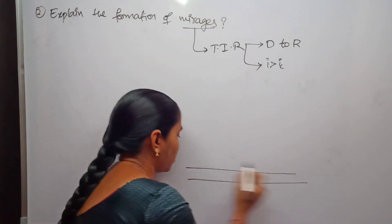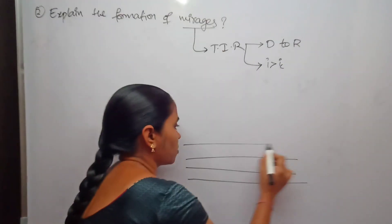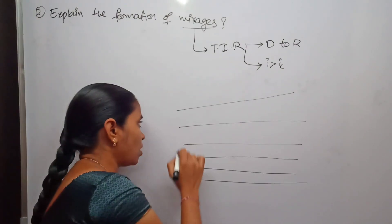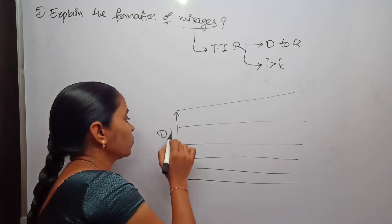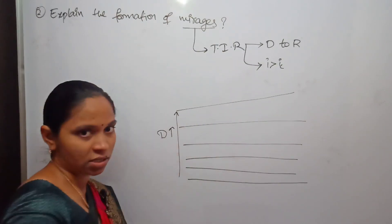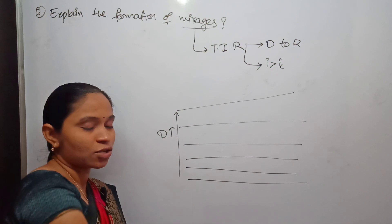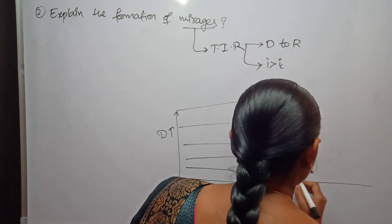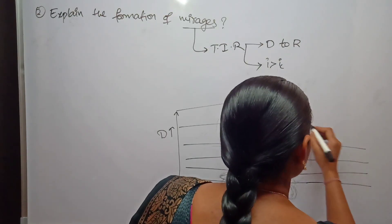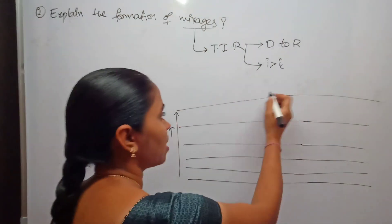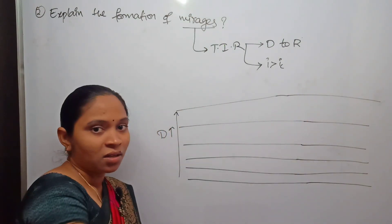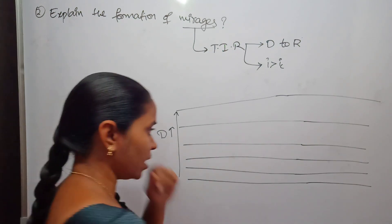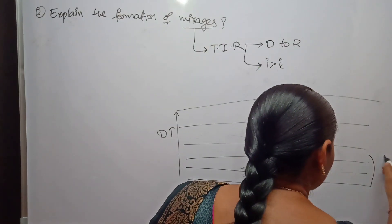These are the different layers of the air. As you move in the upward direction, the density of the different layers of the air increases. Whenever a light ray travels from a higher density medium to a lower density medium, the refracted ray will bend away from the normal.